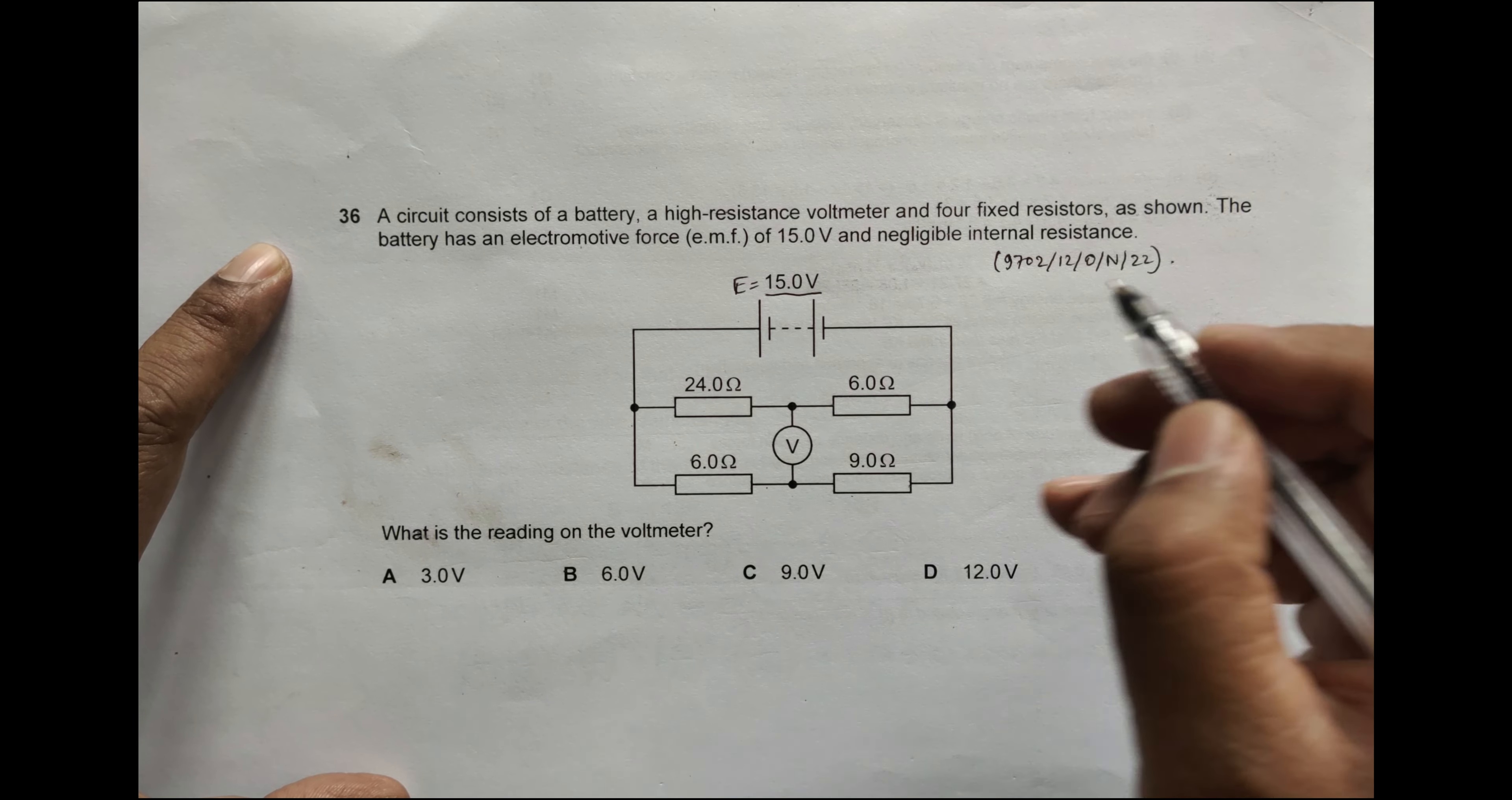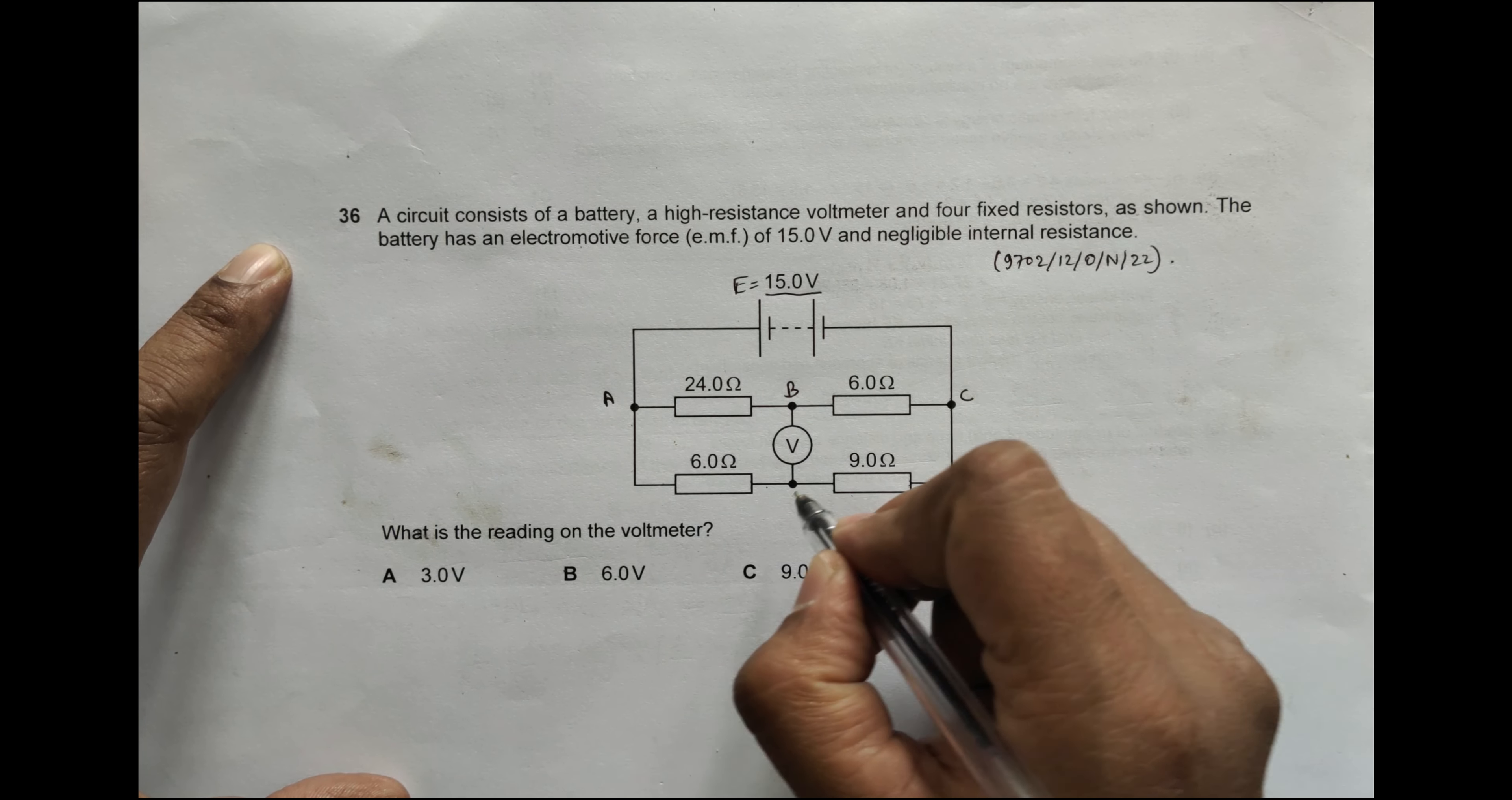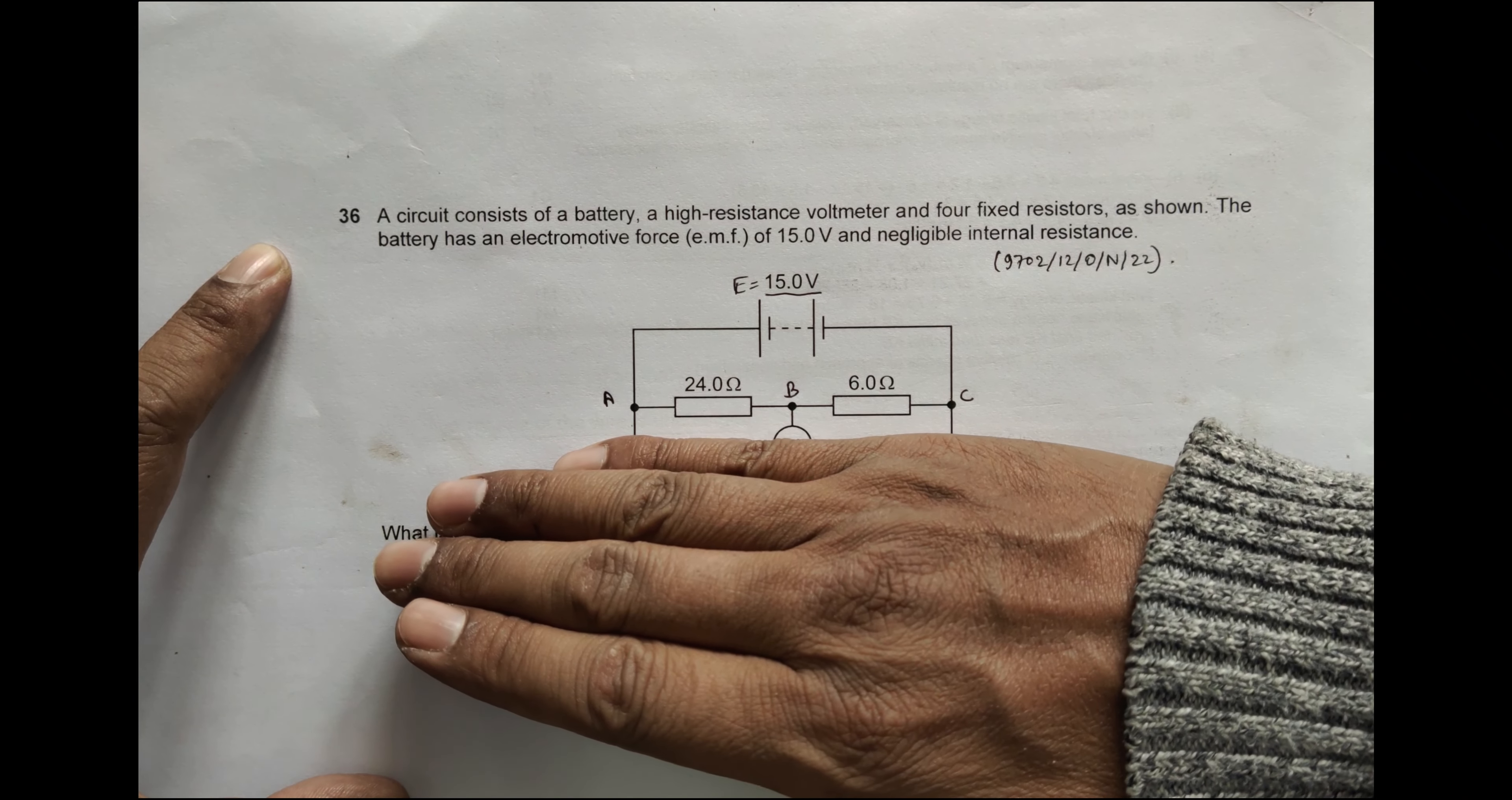So we have to find what the voltmeter reads. For that purpose, let me name the terminals here. Let me name it as A, it has B, it has C, and name it as D.